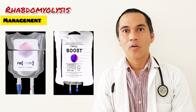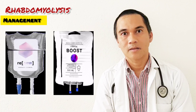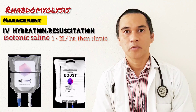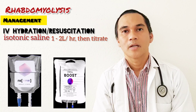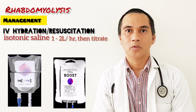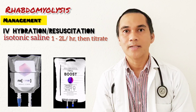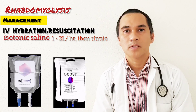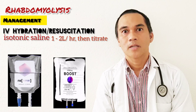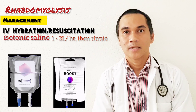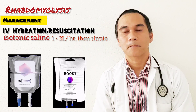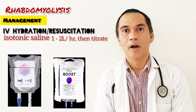The hallmark of management of rhabdomyolysis is IV hydration or fluid resuscitation. Current guidelines recommend 1 to 2 liters per hour, then titrate according to response. When assessing response, we're looking at urine output, which can be titrated to 300 to 400 ml per hour.